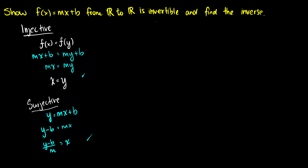Now, what is the inverse? From solving for x we found x = (y − b)/m, so that is the inverse function. We've now shown that f(x) = mx + b is invertible.